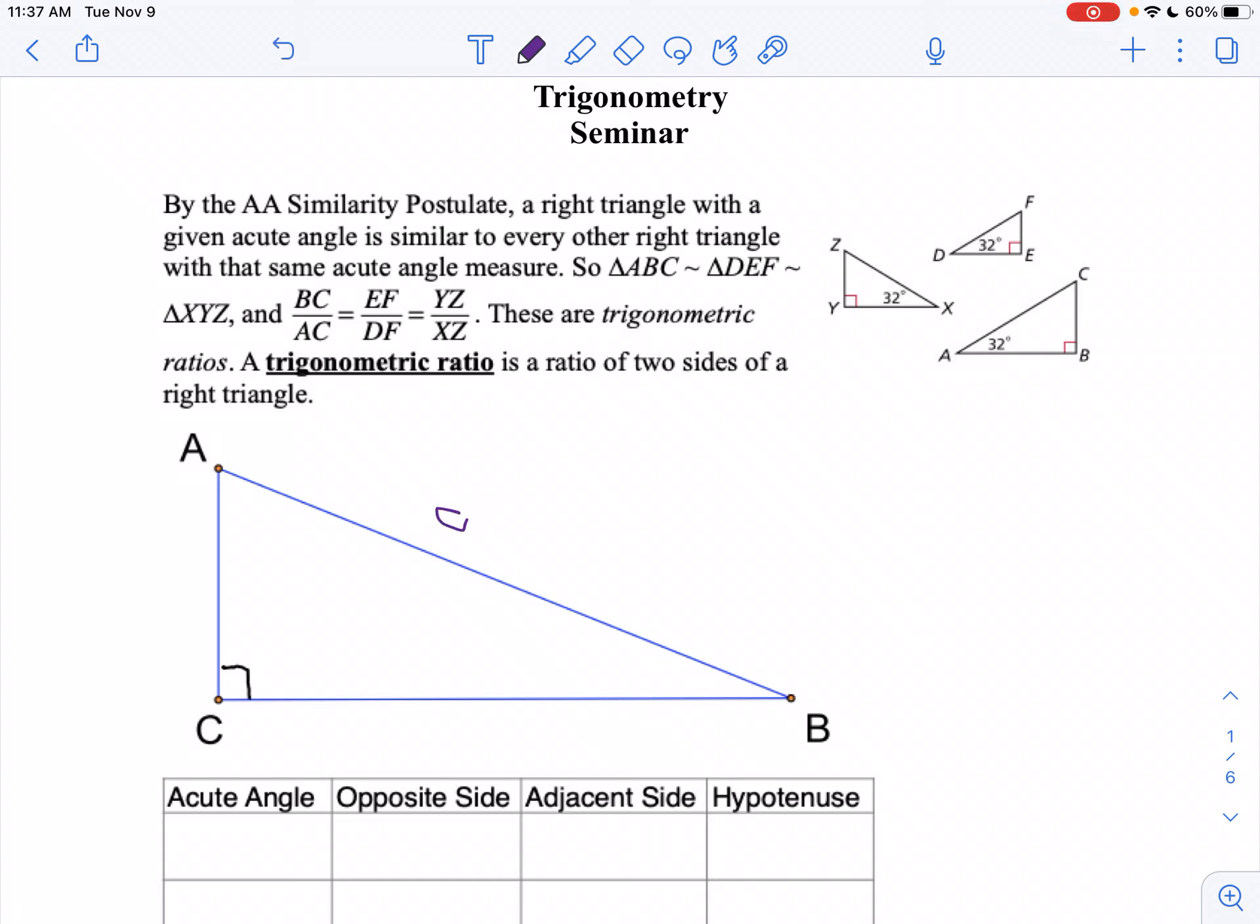So I'm going to call the hypotenuse lowercase c. This would be lowercase a because it's across from angle A, and across from angle B, that would be lowercase b.